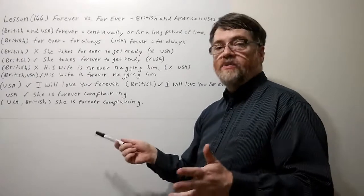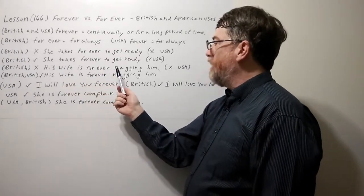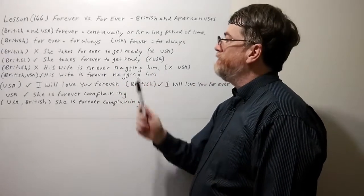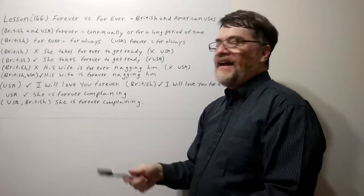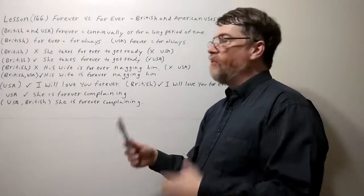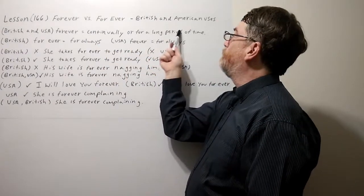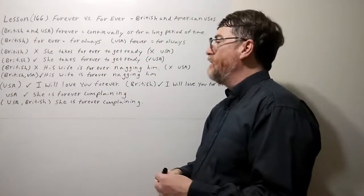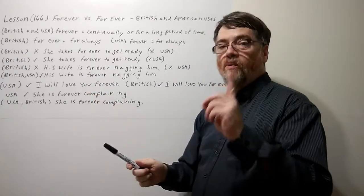Okay, let's look at the next one that is also wrong. His wife is forever nagging him. Okay, well remember this for ever means for always. Again, you don't literally mean for always, but what you do mean is continually or for a long period of time. So again in British English this forever should be one word.